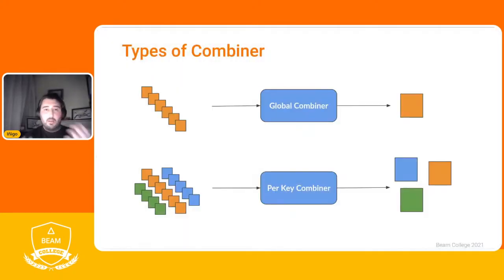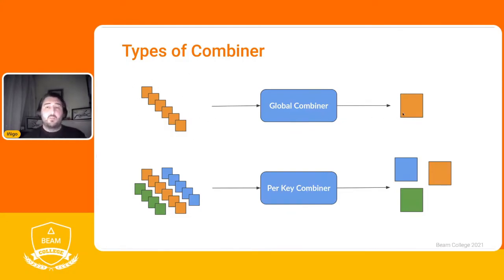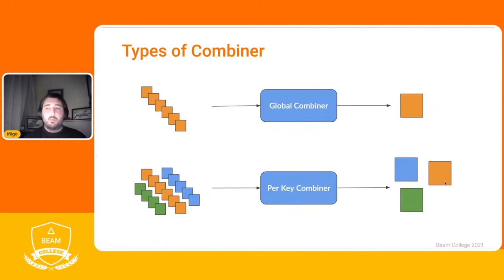Here's a visual example. With a global combiner, all elements in our P-collection are reduced to one single element. With a per-key combiner, we output one element per key — all the blues produce one blue element, all the greens produce one green element, all the oranges produce one orange element, and so on.